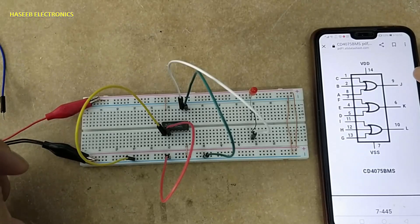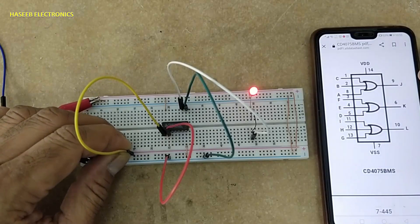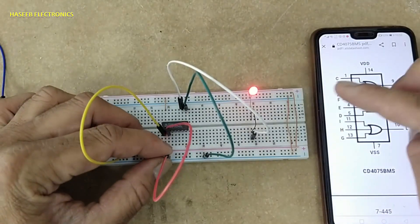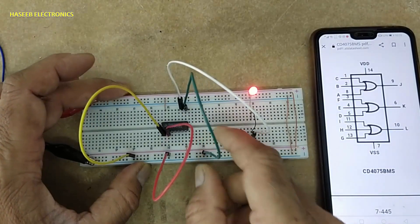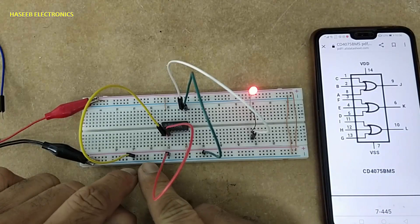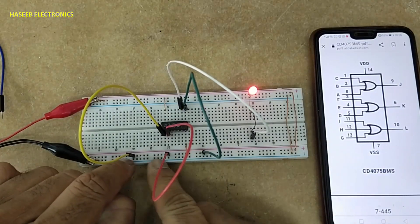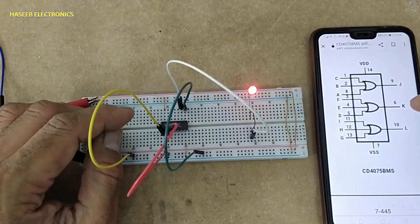When any one input is high, two inputs high, or three inputs high, that gate will provide high output. Any one input high or all inputs high, output is high. Let's check the second gate.